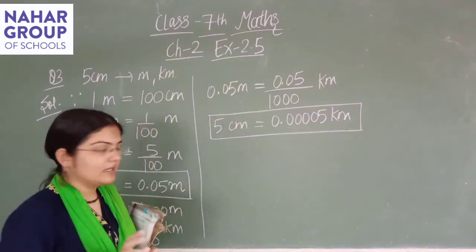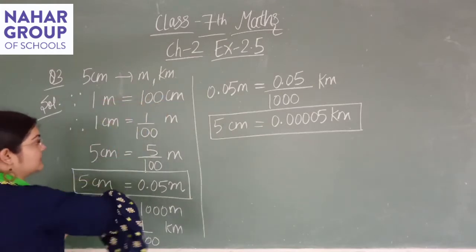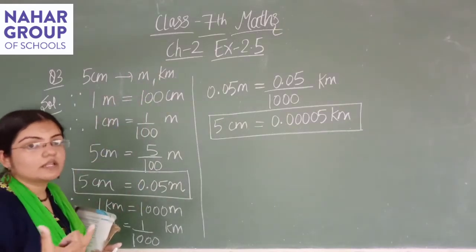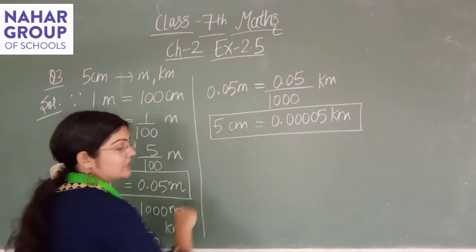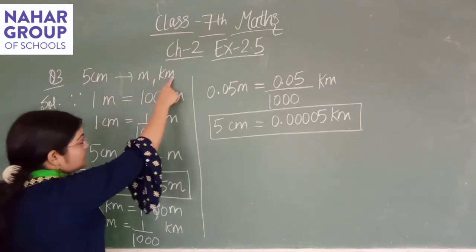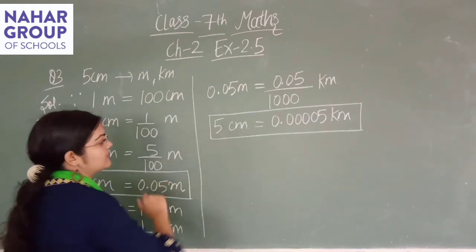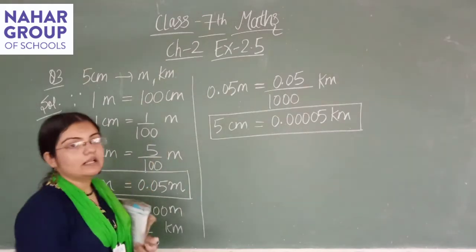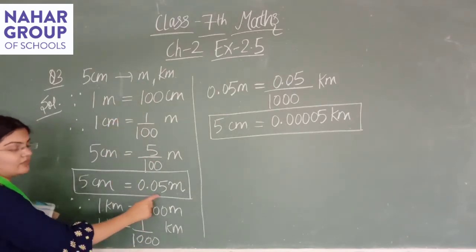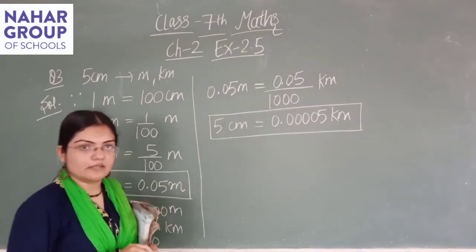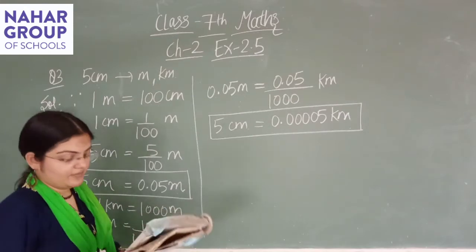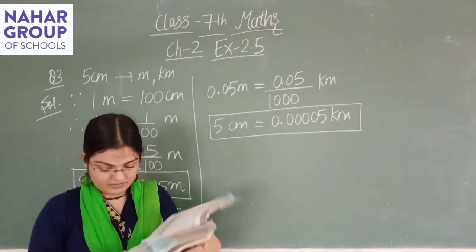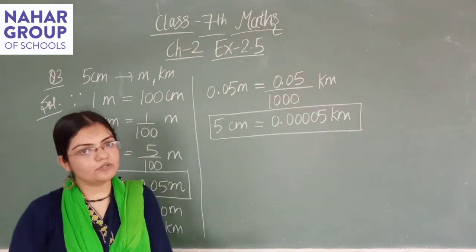I hope you understood this. सबसे पहले centimeter से meter में convert किया, फिर kilometer में भी करना था — centimeter to kilometer कोई direct relation नहीं है, इसलिए meter के relation का use किया। आपका final answer: meter में 0.05 m, kilometer में 0.00005 km। Second part of this third question is your homework — same है, try doing it at home and if you have any doubt, you can ask me.